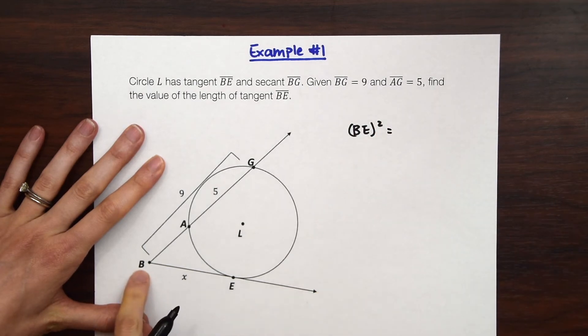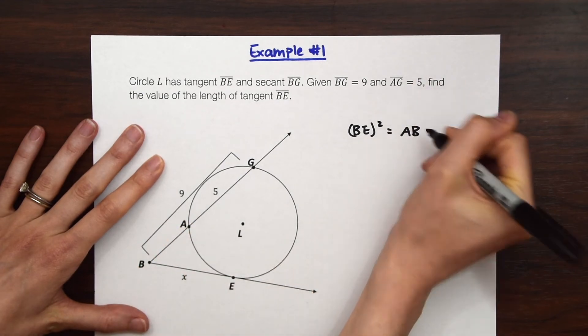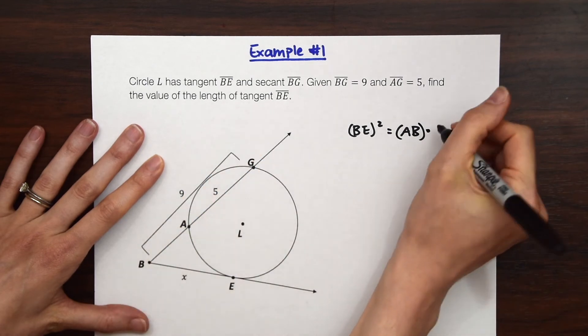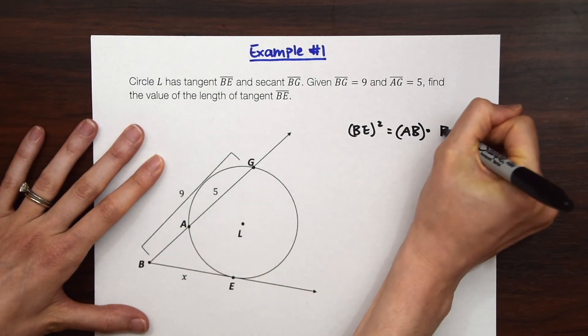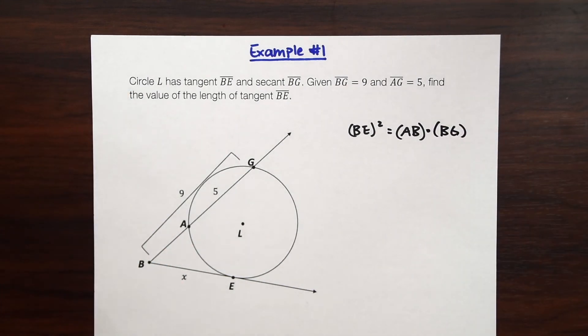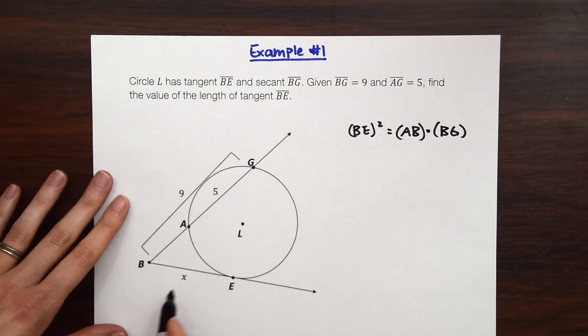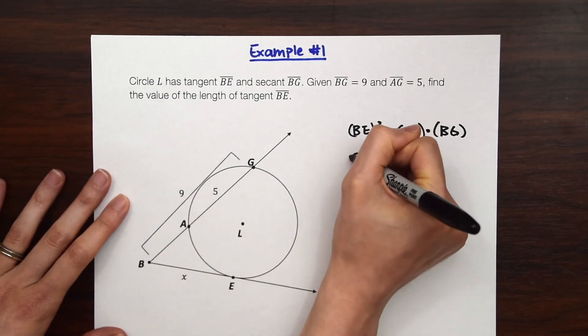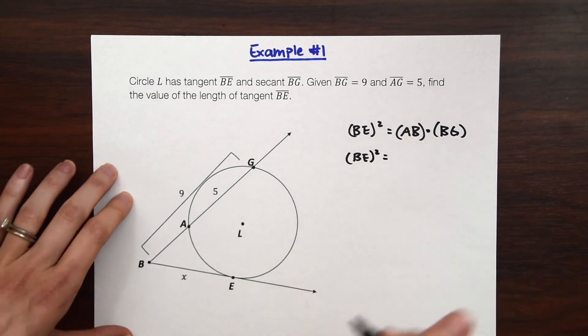And we're setting it equal to the first part of our secant AB times the entire value of the secant BG. So if we look at the value of our tangent we don't know what it is and that's what we need to find, so we're just going to leave this the same or you could label it X. So we have BE squared.